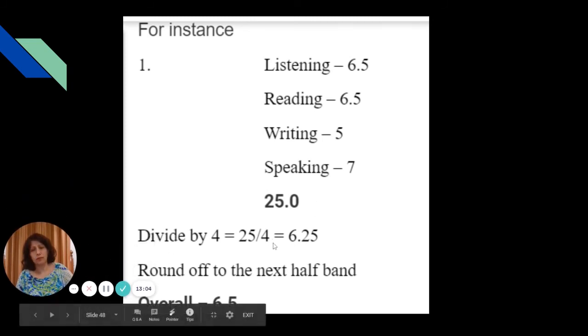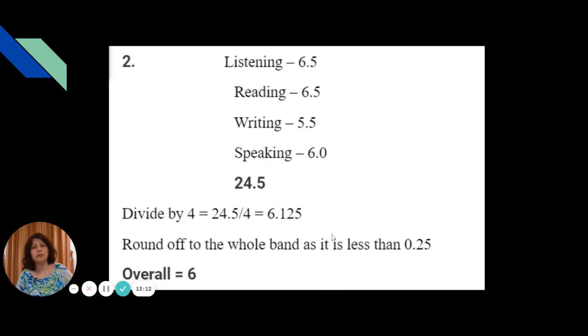The total is 25. Now this total score is divided by 4 and it gives 6.25. We round off to the next half band and overall is 6.5. Similarly, if the score is 6.125, we round off to the whole band. It is less than 0.25 so the score is not 6.5 but 6. You can just pause the video and have a look.